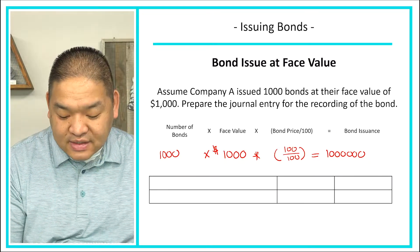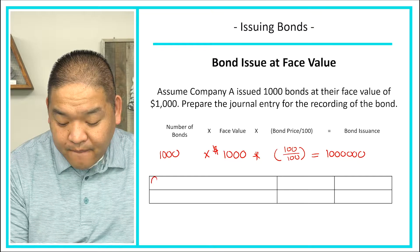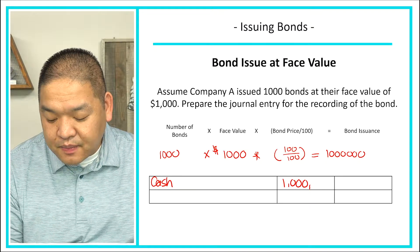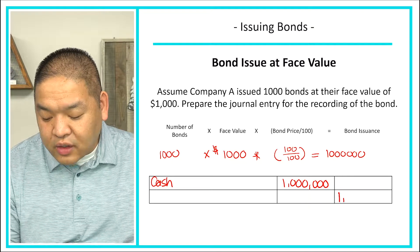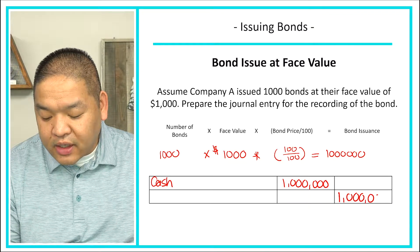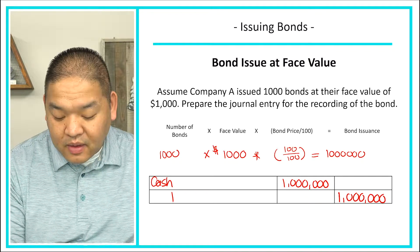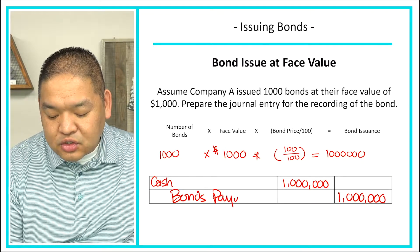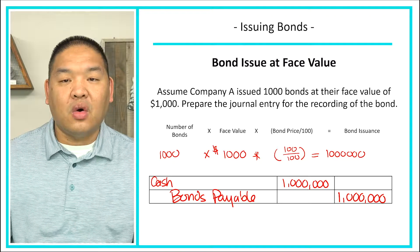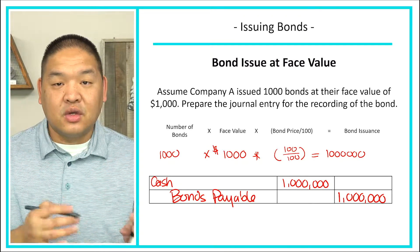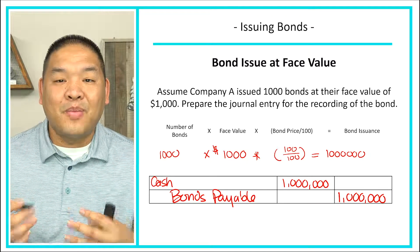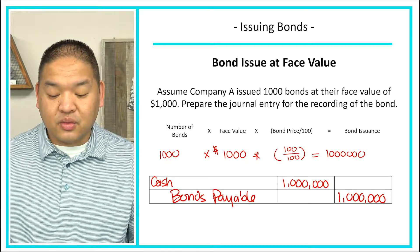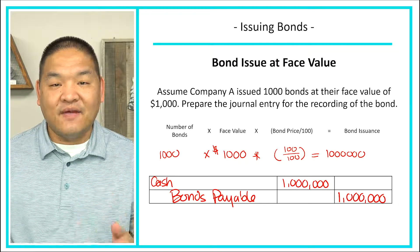What did we receive? We received cash. So we're going to debit cash in the amount of $1,000,000. Then we're going to credit bonds payable, because we owe money to our bondholders in the form of a bond — not notes payable, but bonds payable. That is the entry we would put into our books when issuing a bond at face value.